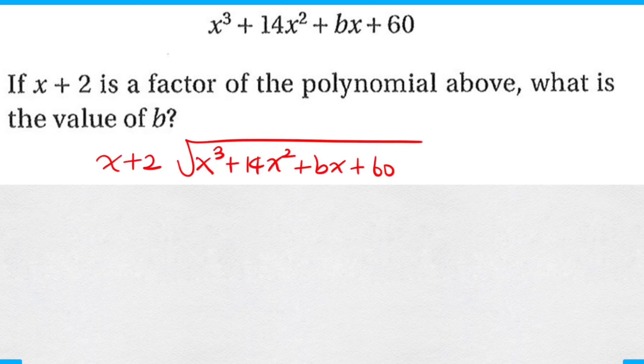So when you do long division, the point is to match the first term of the polynomial, when the terms are listed in decreasing order of degree, to the first term of the factor. In order to do that, I must multiply by x squared.